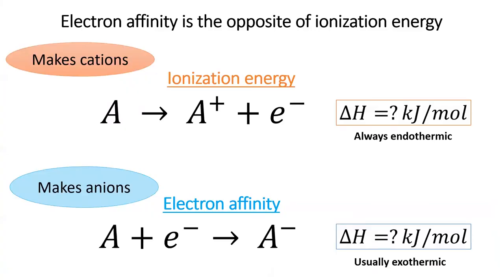As a reminder, electron affinity is the opposite of ionization energy. Electron affinity is usually exothermic, especially when an element can fill a subshell. Elements which want to gain electrons therefore have negative electron affinities.